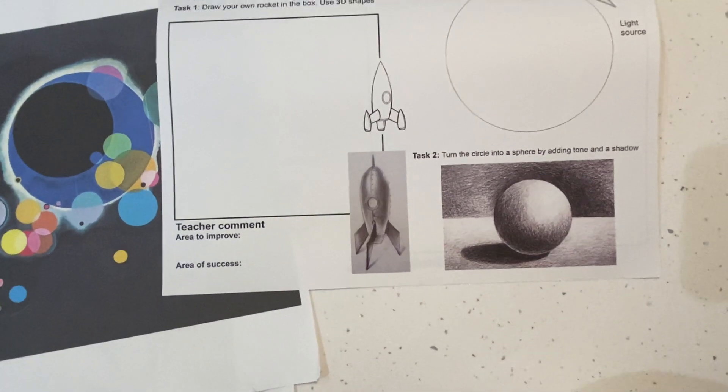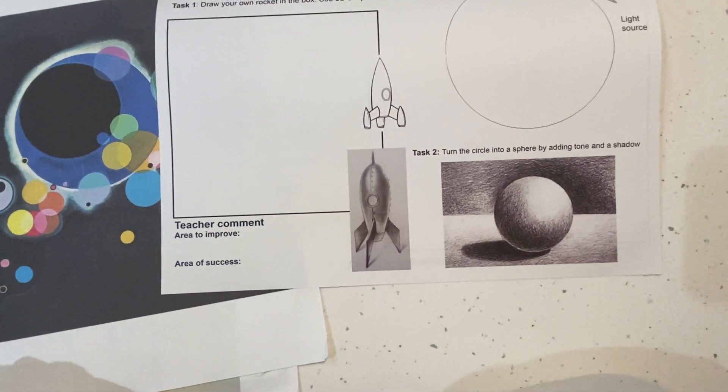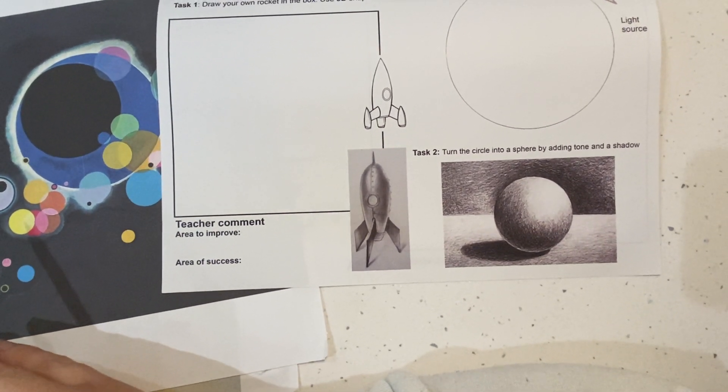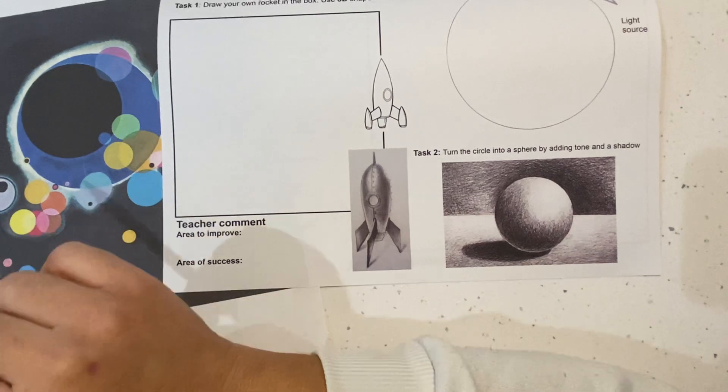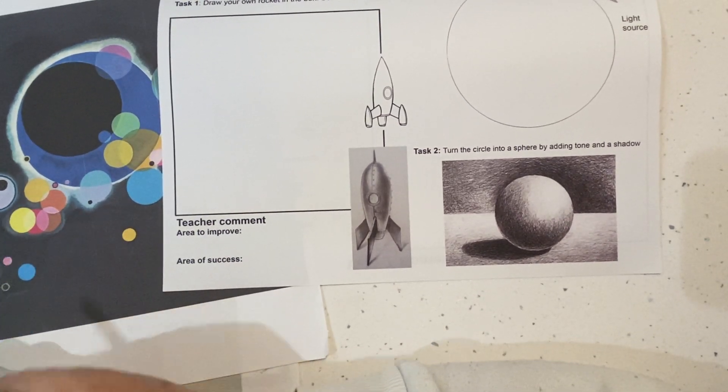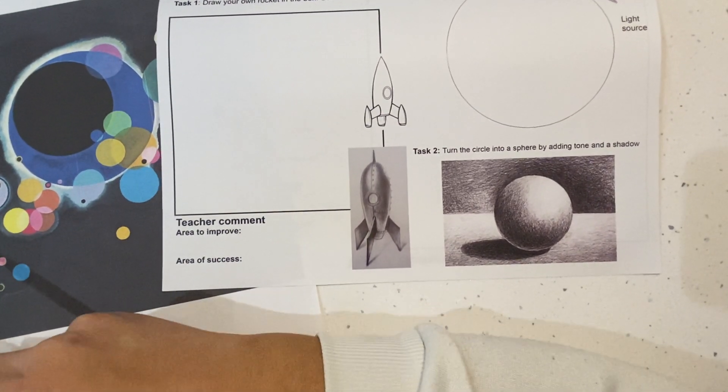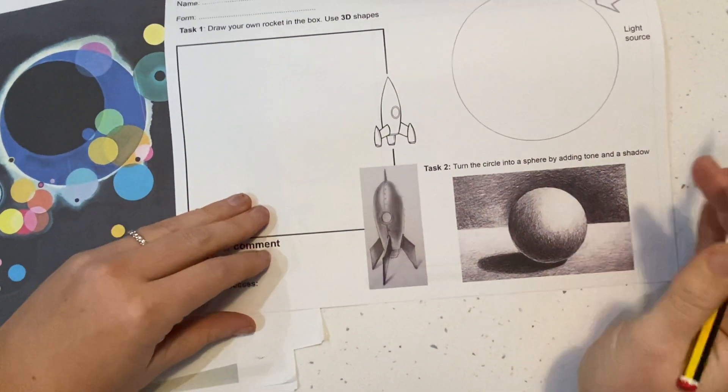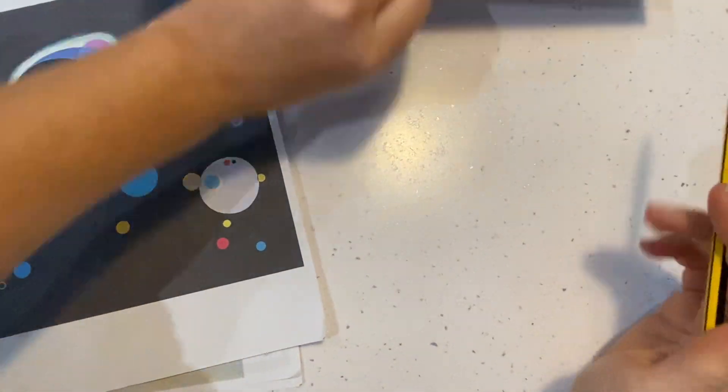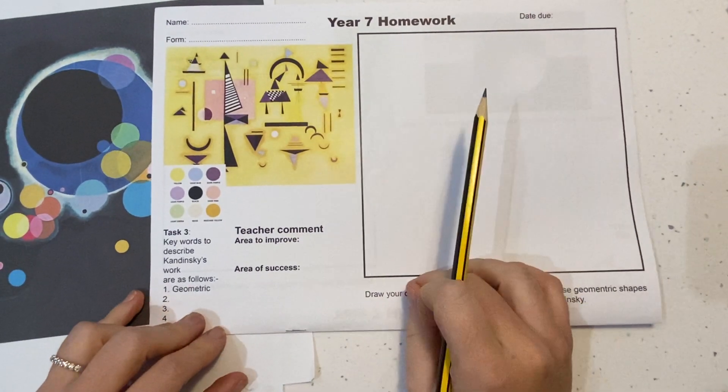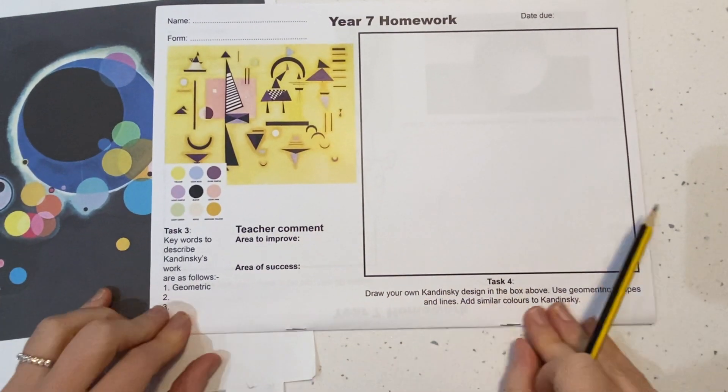If for whatever reason you don't have your homework booklet at home, don't worry. All you need to do is go on to Firefly, Resources, Art, and then it will have a tab that says Remote Learning. On that tab it also has homework booklets for all of the year groups, so you can just print out the Year 7 booklet. Alternatively, you could print out just this page on the booklet because that's the one that we're going to be using today. So that is page two of the homework booklet, the Year 7 homework booklet.